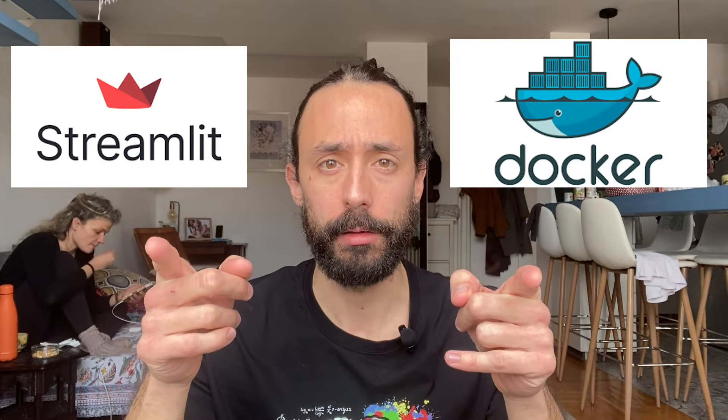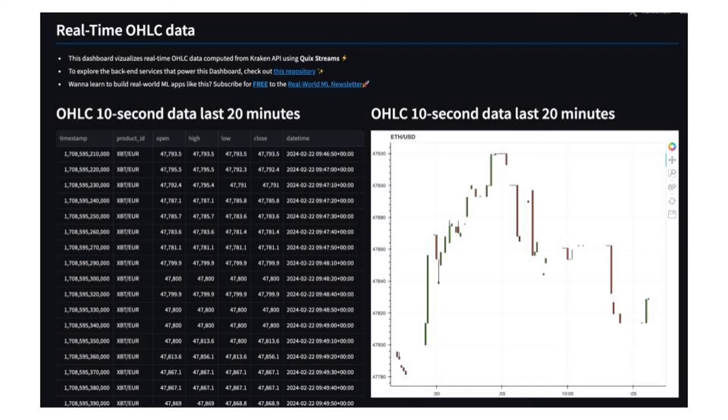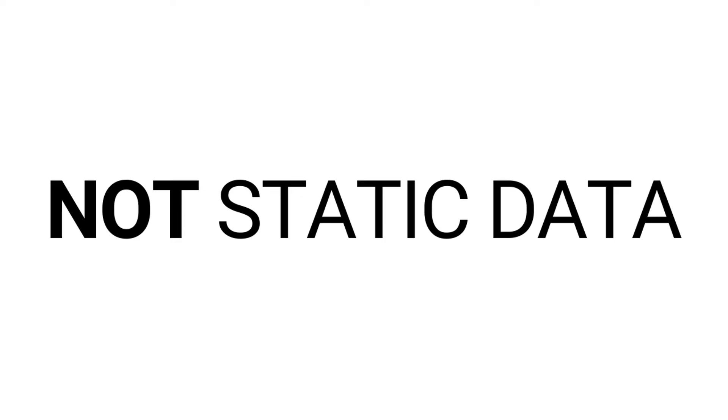In this video you will learn how to build a production ready machine learning dashboard using Streamlit and Docker. We'll build a web application in Python that plots cryptocurrency prices, expressing open high low close candles every 10 seconds. For that we will use Streamlit to build our front-end app using Python without having to know any JavaScript, Python Poetry to package our Python code professionally, and Docker to containerize our app and ease the deployment to the production platform.